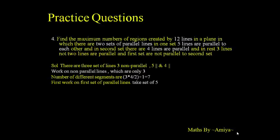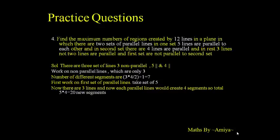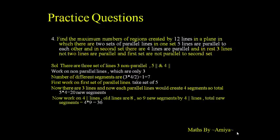Work on the second set (5 parallel lines): before this step, 3 lines are in the plane, so each parallel line creates 4 new segments (3 + 1 = 4). Total new segments from set of 5: 5×4 = 20. Now work on the set of 4 parallel lines: after the previous steps, 3 + 5 = 8 lines are in the plane, so each parallel line creates 9 new segments (8 + 1 = 9). Total new segments from set of 4: 4×9 = 36.